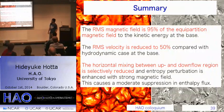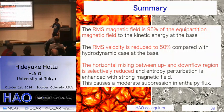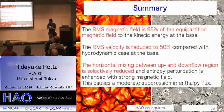This is the summary. The main result of my calculations: the RMS magnetic field can be 95% of the equipartition magnetic field to the kinetic energy at the base of the convection zone in the higher resolution calculation. The RMS velocity is reduced to 50% compared with the hydrodynamic run. The horizontal mixing between upflow and downflow is suppressed by the magnetic field. The entropy perturbation is enhanced, improving the efficiency of energy transport by the entropy flux. Thank you.